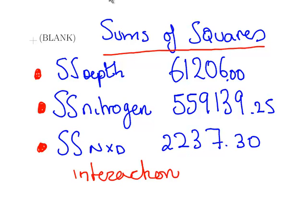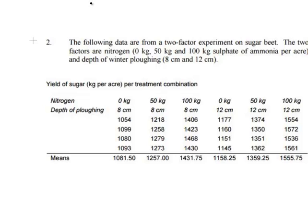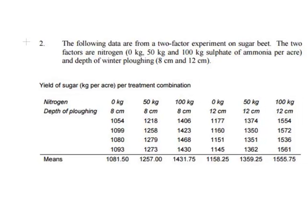This is the question again. The following data are from a two-factor experiment on sugar beet. The two factors are nitrogen, where there are three levels: 0 kg, 50 kg, and 100 kg sulphate of ammonia per acre, and also the depth of winter ploughing. What we have there is two factors, two levels by three levels. So we have these six possible combinations, and we have four replicates for each combination. That's how we find the replicate measurements.